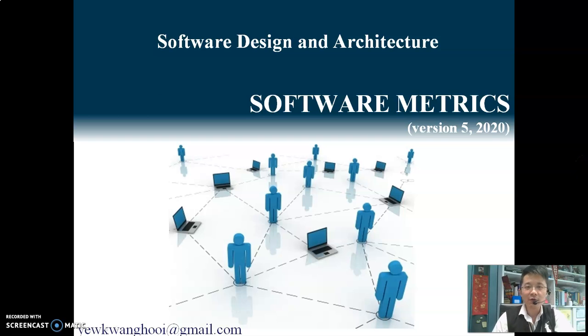Welcome back students to Software Design and Architecture Part 4 of Software Metrics. In the previous lecture, we have been looking at a few Coupling Between Objects metrics. These metrics are Fanout, MPC or Message Passing Coupling, and RFC which is Response for Class. I believe there are some confusions of the differences between these three metrics. Therefore, in this lecture, I would like to give an example to show the differences.